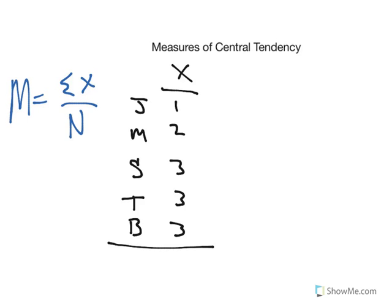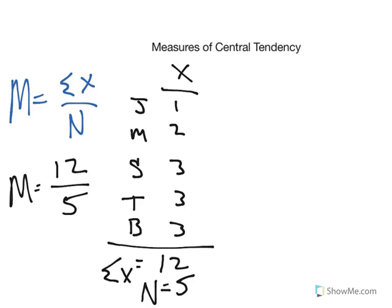So in this case, we have three plus three is six, plus three is nine, plus three is twelve, plus two is—wait, let me recalculate. Three plus three is six, plus three is nine, plus two is eleven, plus one is twelve. So sum of X equals twelve. Now N is equal to the number of numbers: one, two, three, four, five. So the mean here is going to equal twelve divided by five, which gives us 2.4.